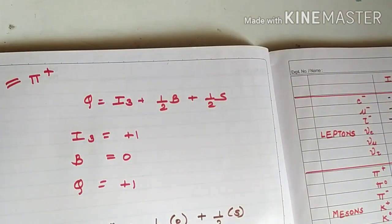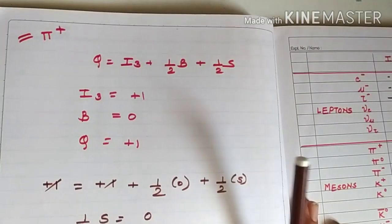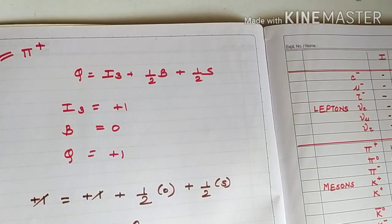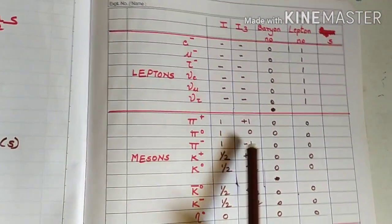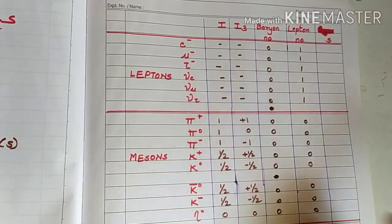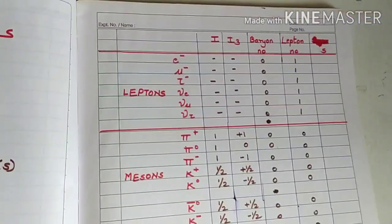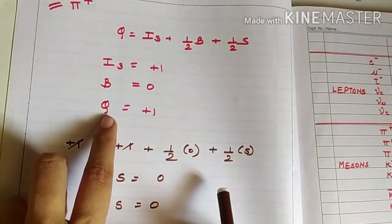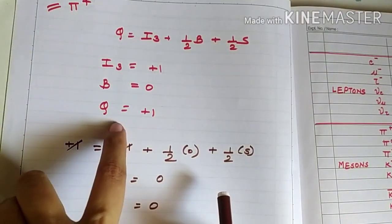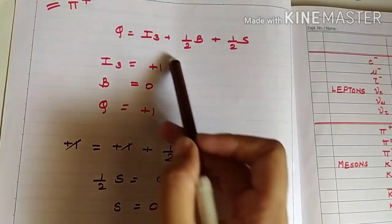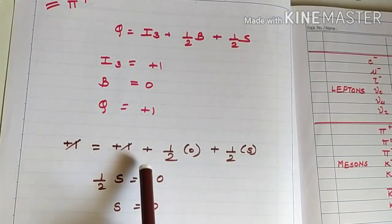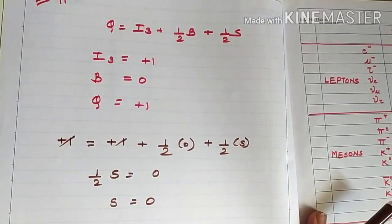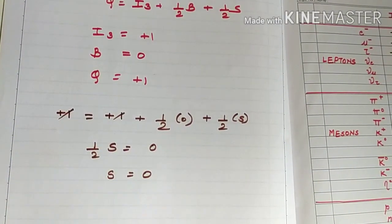Let's start with the example of pi positive, the positive pion meson particle. The Gell-Mann Nishijima relation lets us put in the values of Q, I3, and B. From the chart, I3 for pi meson is plus one, and baryon number for pi meson is zero. Since it is pi positive, charge Q is plus one. We put all three values into the relation: plus one equals plus one plus half times zero plus half times S.